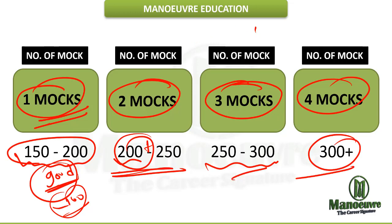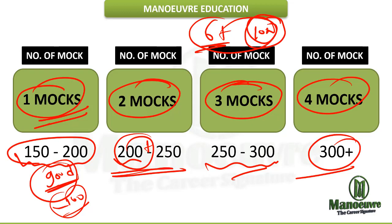In total you get 10 full-length mock tests, plus six years of past papers. In addition there are topic-wise and sectional tests for practice. Make sure you use these 10 mock tests sensibly, and your target in CMAT should be 300 plus.